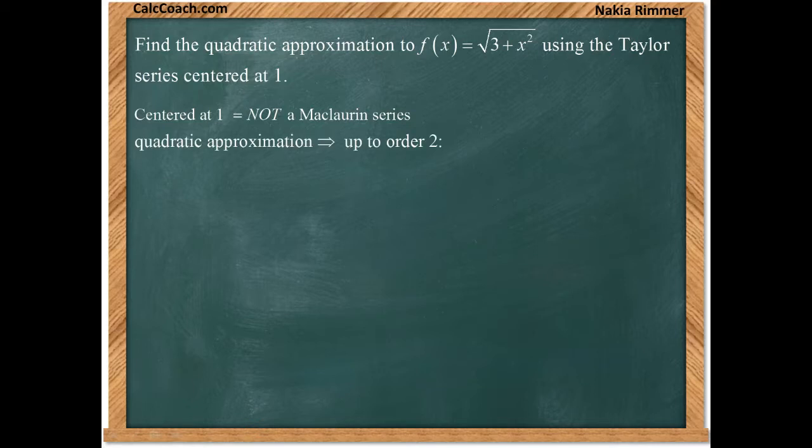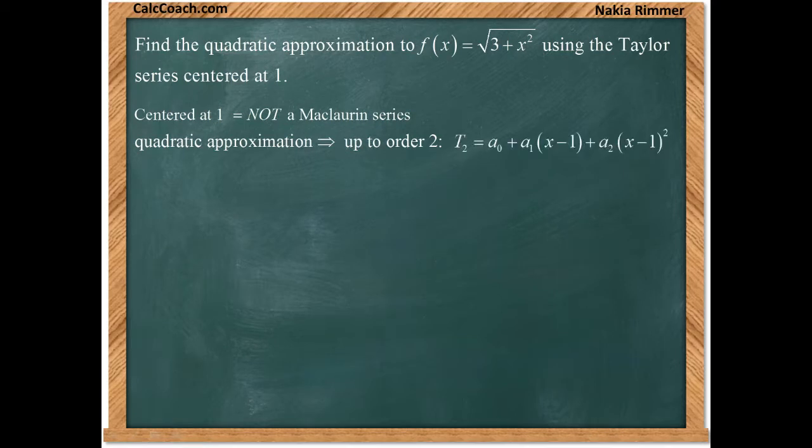And when they say quadratic approximation, we have to understand that means we go up to order 2. So there's going to be a polynomial, that's a parabola when graphed, that will have perhaps a constant term, a linear term, and a squared term. Our job is to find the coefficients.